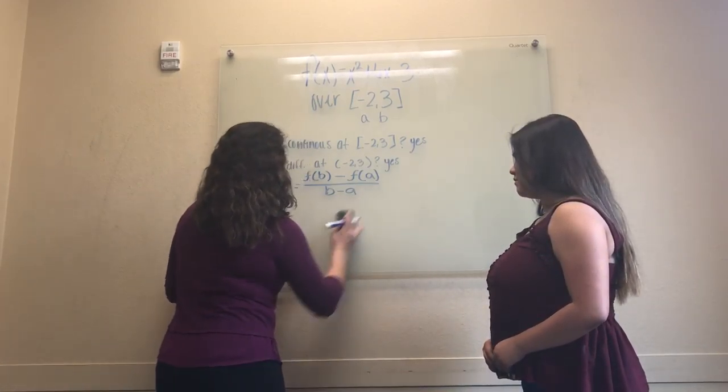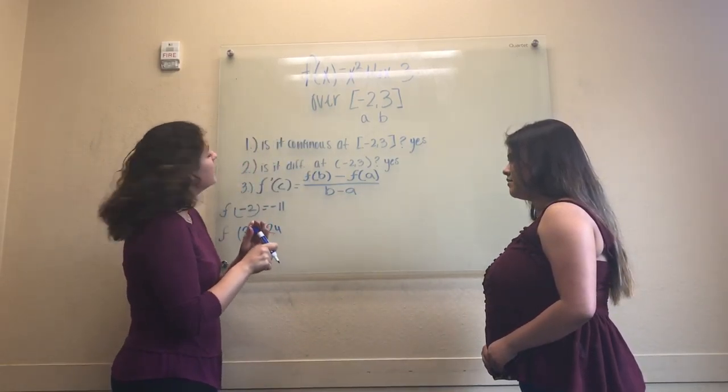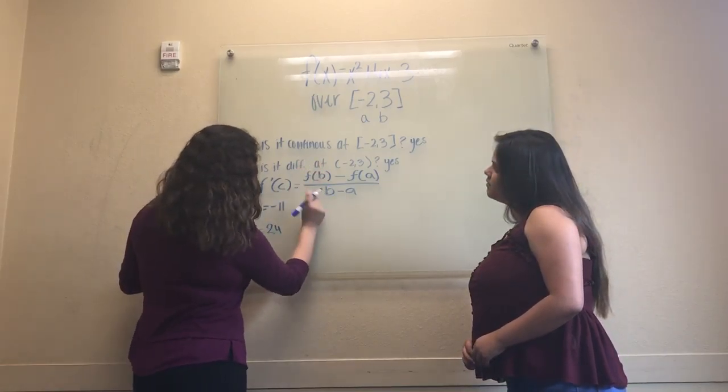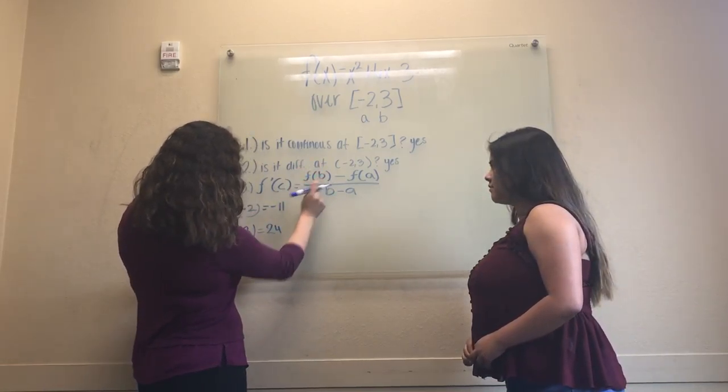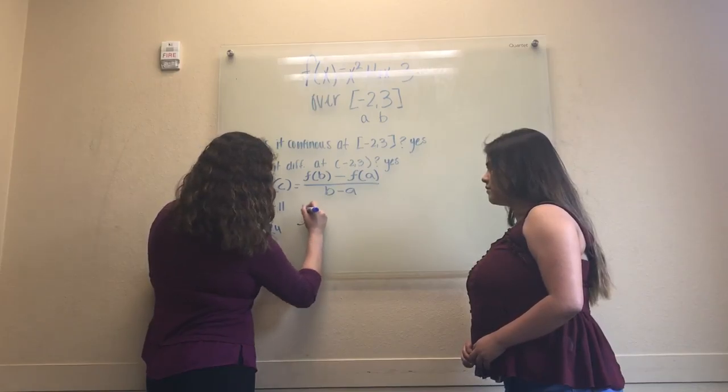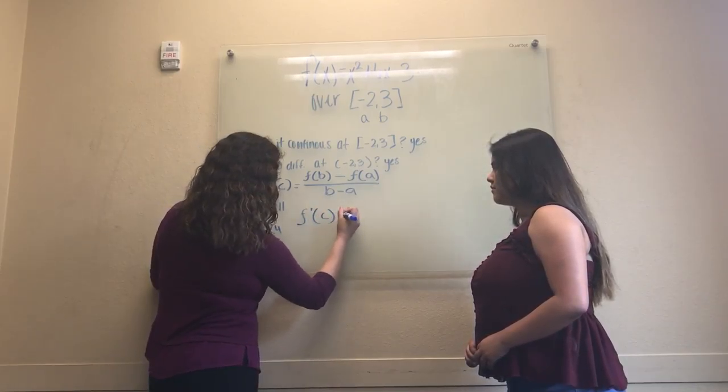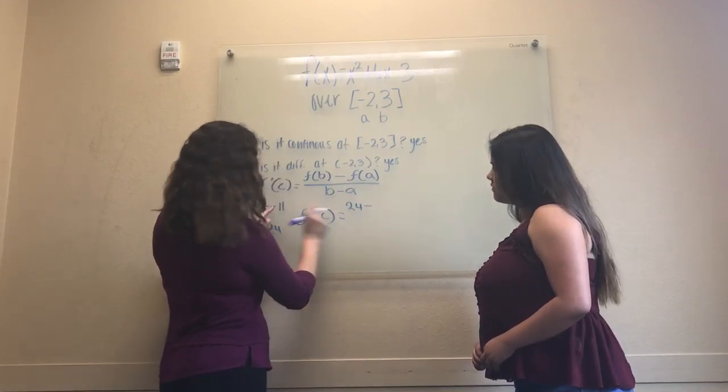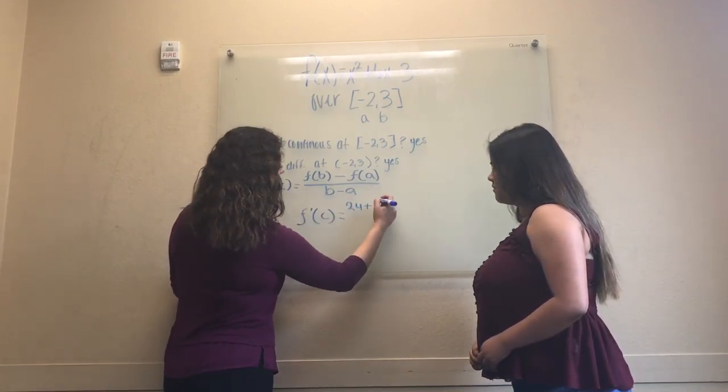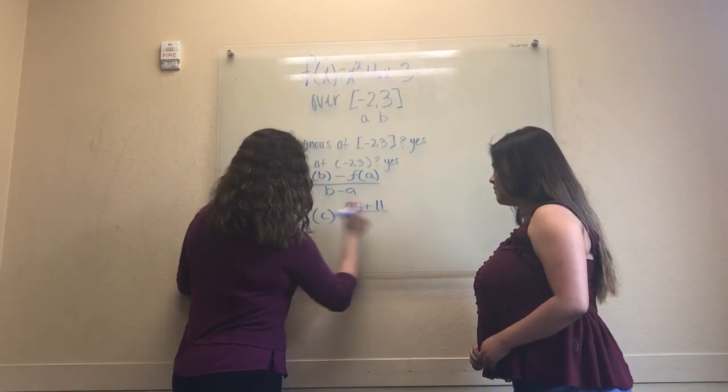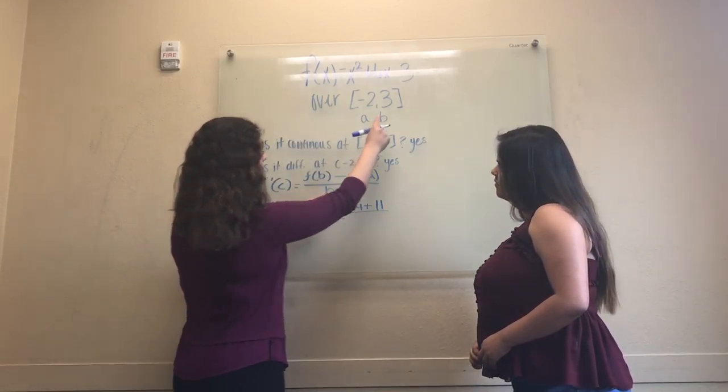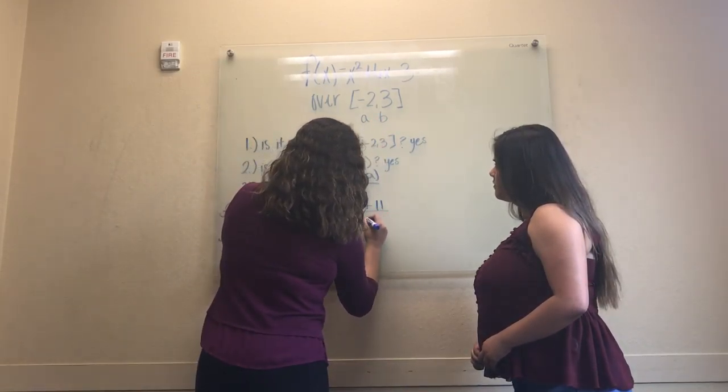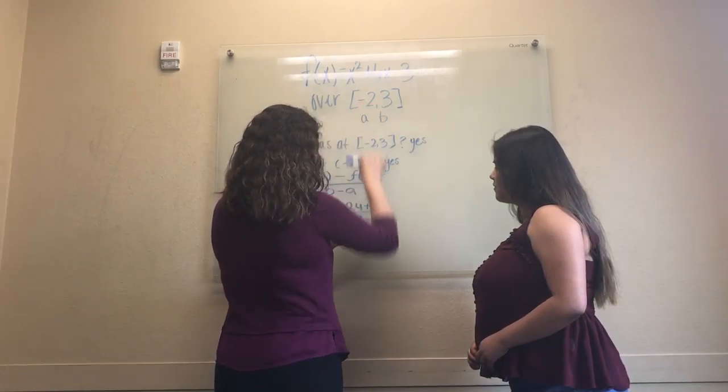Because we know f of a equals negative 11 and f of b equals 24, we don't have to do everything because we're working with the same formula. So now we have to find f prime of c equals 24 minus negative 11, which becomes 24 plus 11 over b, which is 3, minus negative 2, which becomes positive 2.